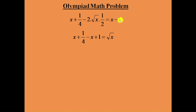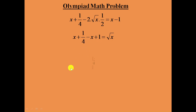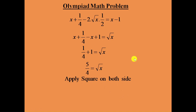Now bring x − 1 from the right side to the left side: plus x becomes minus x, and minus 1 becomes plus 1. The 2 and 2 cancel, leaving minus square root of x. Sending minus square root of x to the other side makes it plus square root of x. We can see plus x and minus x cancel. The remaining value is 1/4 plus 1, which is 5/4. So square root of x equals 5/4. Applying square on both sides: x equals 5² divided by 4², which is 25/16. The value of x is 25/16.